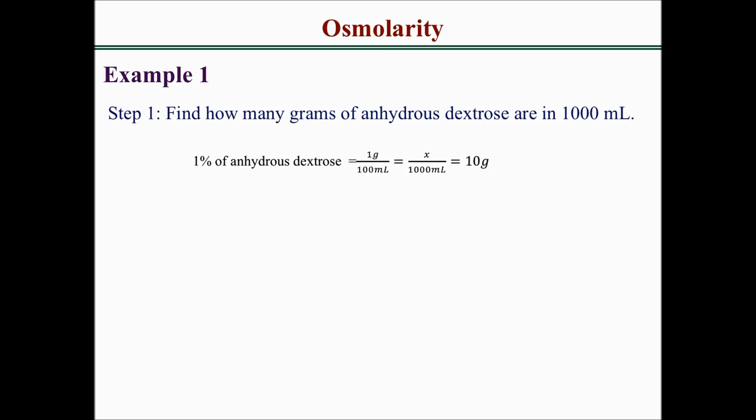1 gram over 100 mL equals x over 1000 mL. If we do our calculations right, we should be able to get 10 grams of anhydrous dextrose. That means there are 10 grams of anhydrous dextrose in 1000 mL.